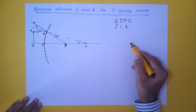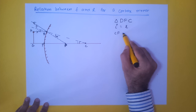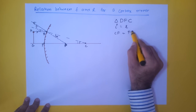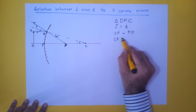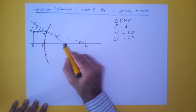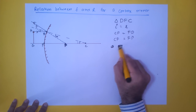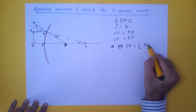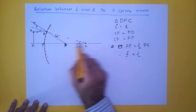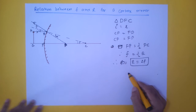Focusing on triangle DFC for the convex mirror: I = R (law of reflection), so CF = FD. Again assuming very small aperture, FD = FP, which gives CF = FP. Therefore F is the midpoint of PC, so F = R/2, or R = 2F. This shows that for both convex and concave spherical mirrors, the radius of curvature is twice the focal length.